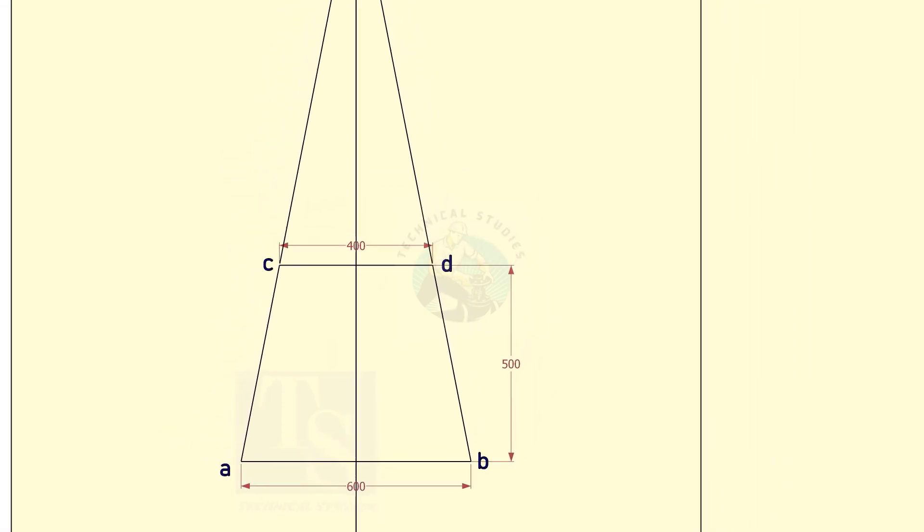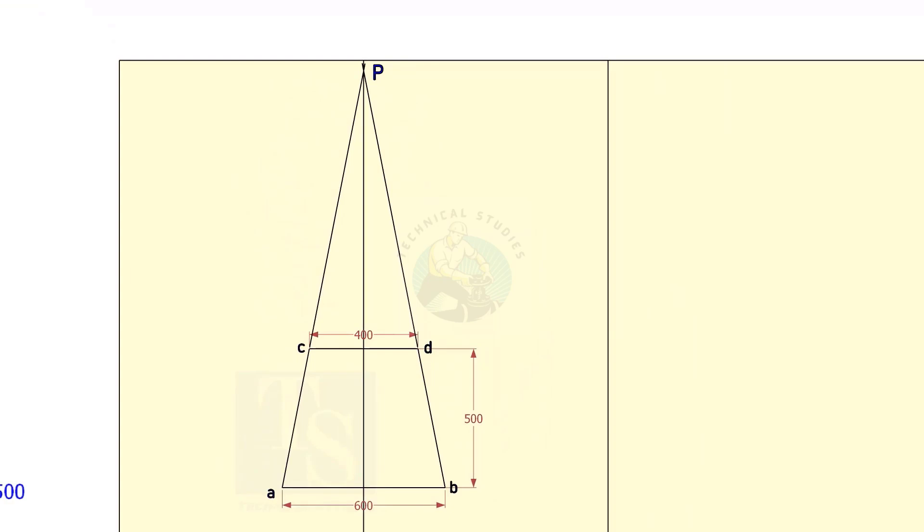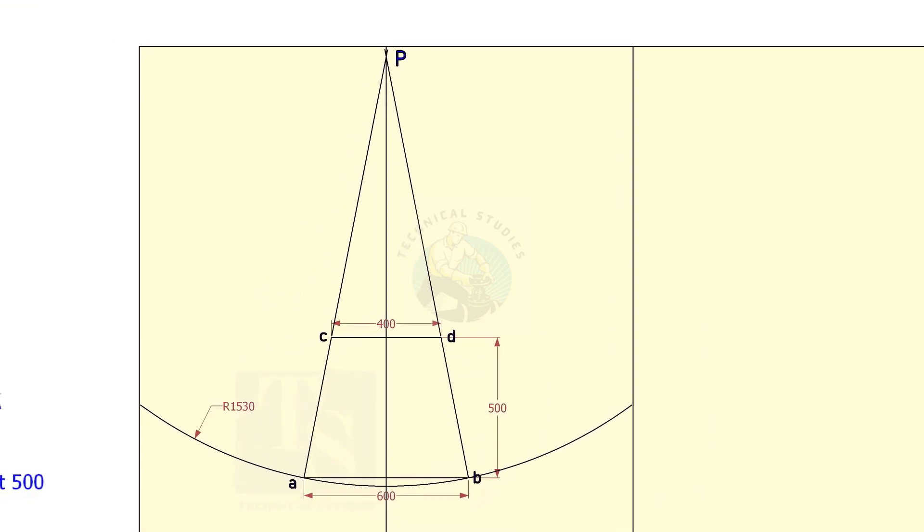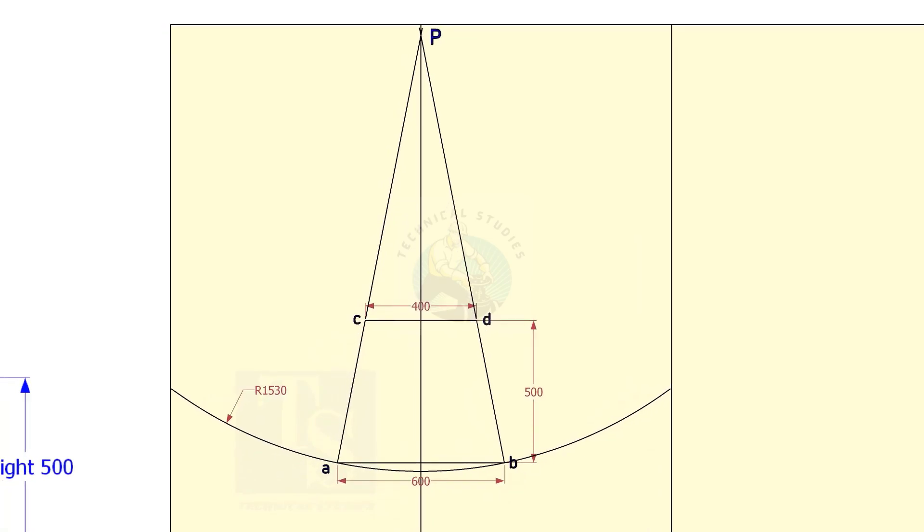Extend the lines AC and BD until the lines intersect each other. Draw an arc, centering P, and the radius PA. Draw the arc PC.